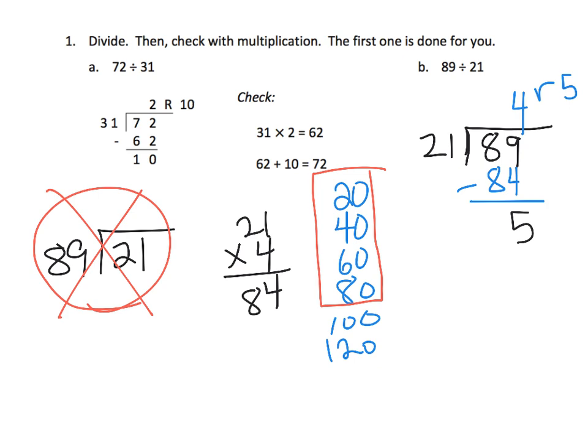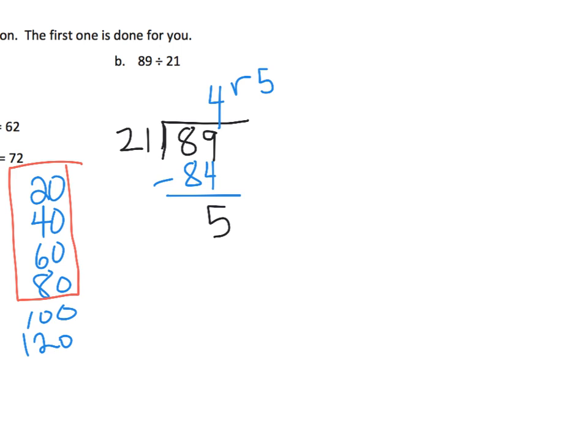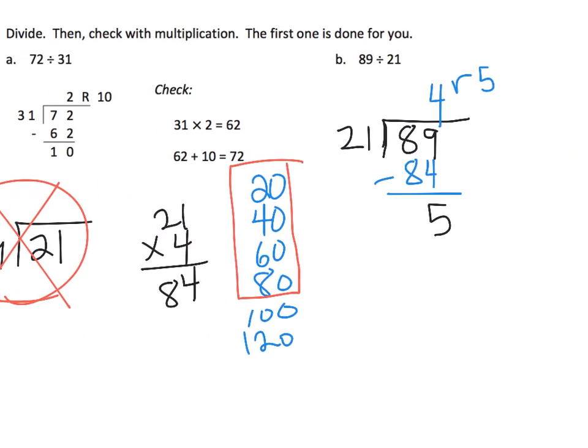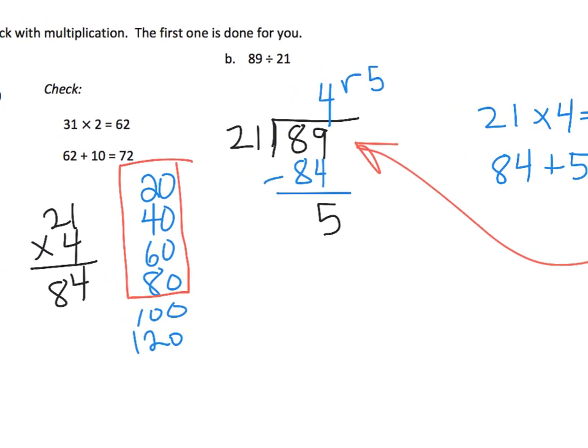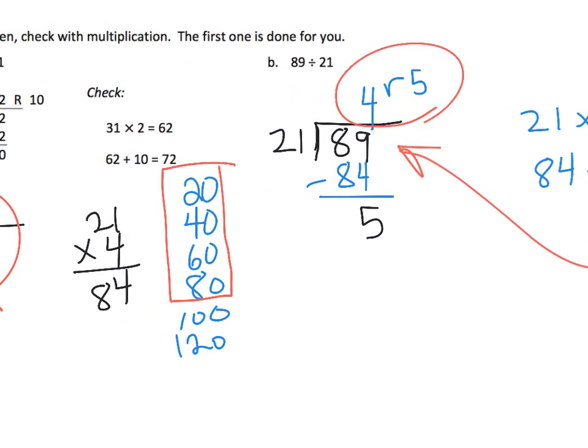Now, how are we going to check it? Well checking, we're going to do a little bit of multiplication here. The way we're going to check it is we're going to say 21 times 4 is 84, and then we're going to take that 84 and we're going to add the remainder of 5 which gives us 89. And because our 89 right here is exactly what was inside the house, that tells us that our multiplication and our division, this answer, our quotient is correct.